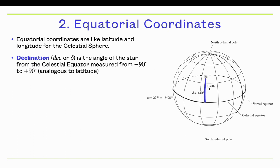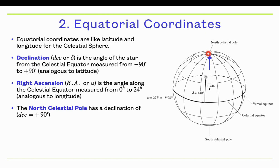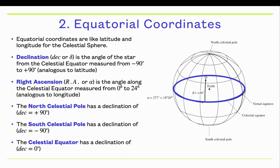You measure the angle either north or south from the celestial equator, and that's the declination. Stars with positive declination are above the Earth's northern hemisphere; stars with negative declination are above the Earth's southern hemisphere. Right ascension is equivalent to longitude — we'll discuss exactly where the zero point is a little bit later, but there is a point on the celestial sphere where it's zero right ascension. The north celestial pole has a declination of plus 90, the south celestial pole is negative 90, and the celestial equator has a declination of zero degrees.